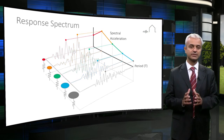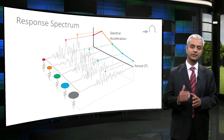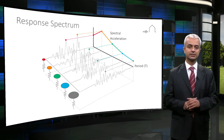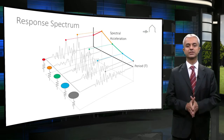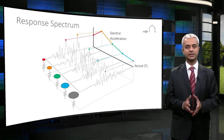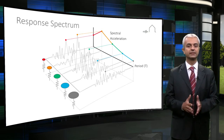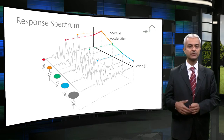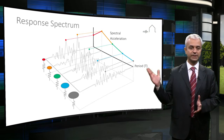Single degree of freedom systems with different dynamic properties, representing structures with different natural vibration periods and critical damping ratios, are selected. They are analyzed by an earthquake record taken from a certain location. The peak response — being either the acceleration, velocity, or displacement of each single degree of freedom system — is plotted versus the natural period of the single degree of freedom system. This is repeated for many different single degree of freedom systems and the graph is obtained, as can be seen in the figure.